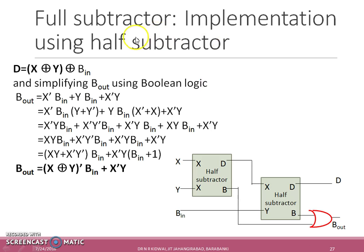The full subtractor can be implemented using two half subtractors. The expression B_out can be simplified by using Boolean logic: X' plus (X' OR Y') B_in plus X'Y, and can be realized by using two half subtractors in this fashion.